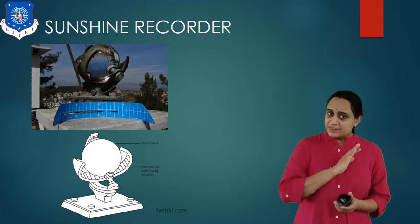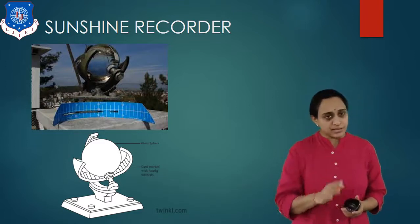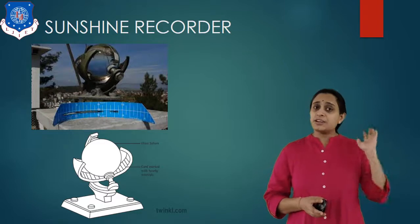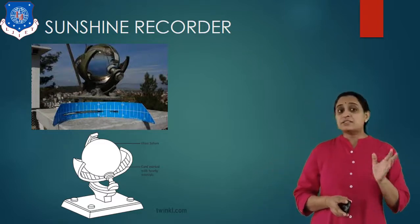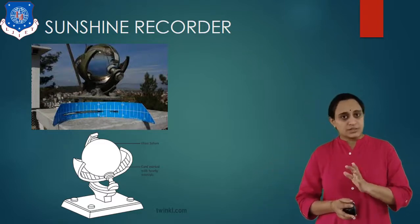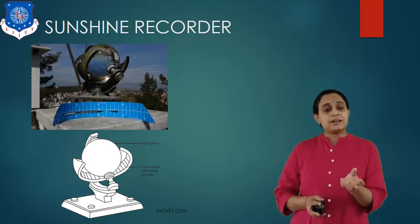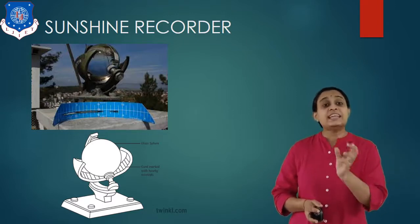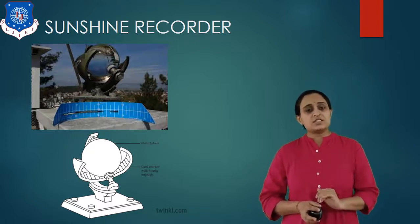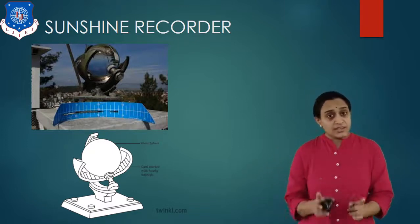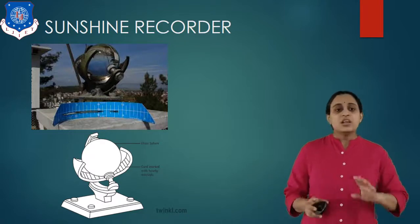It is different from the periheliometer as well as the pyranometer. In the periheliometer and pyranometer, both instruments can measure beam as well as diffuse radiation because they depend on the heating of the black disc. In this sunshine recorder, it can only record sunshine during the daytime.